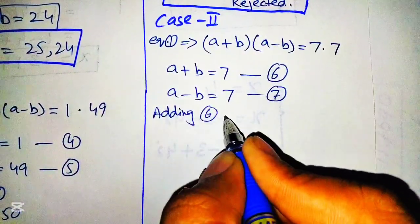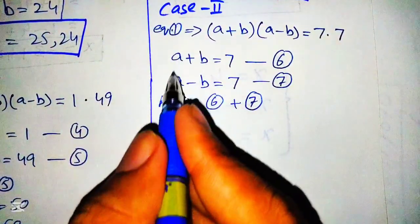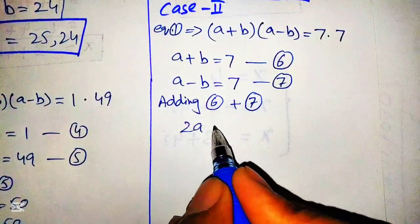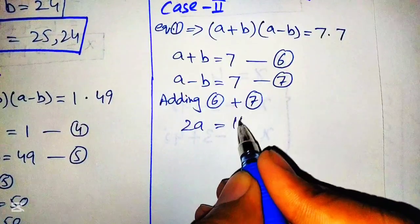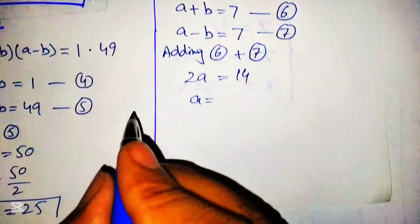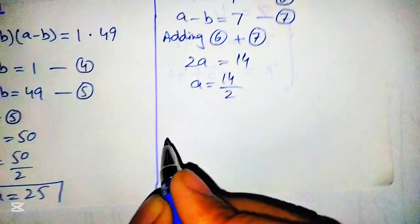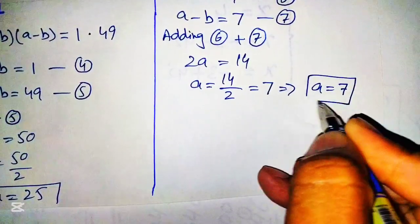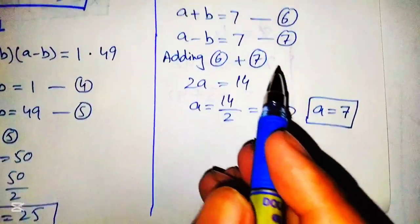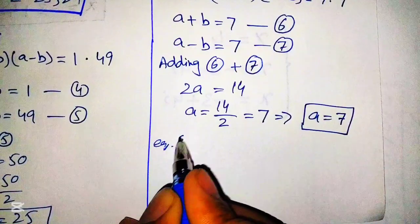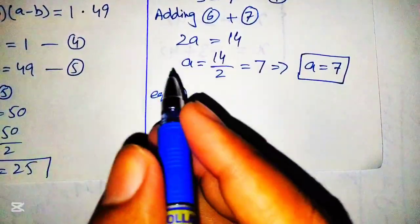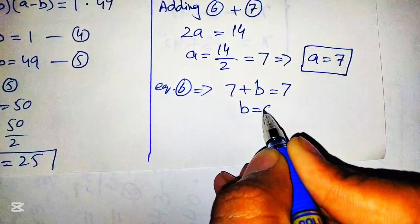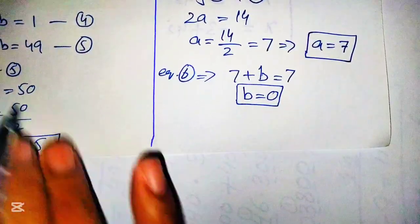Adding equation number 6 and equation 7, a plus a becomes 2a, and b cancels out with minus b. On the right-hand side, 7 plus 7 becomes 14, so a equals 14 over 2, which equals 7. To find b, we put a equals 7 into equation number 6: 7 plus b equals 7, so b equals 0.